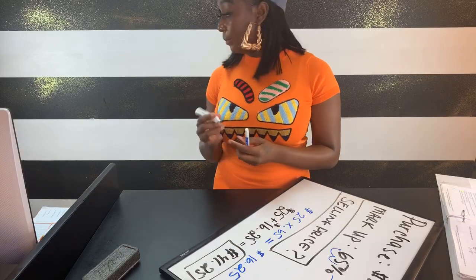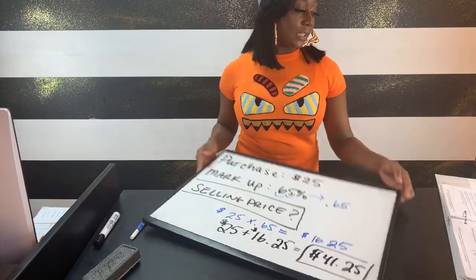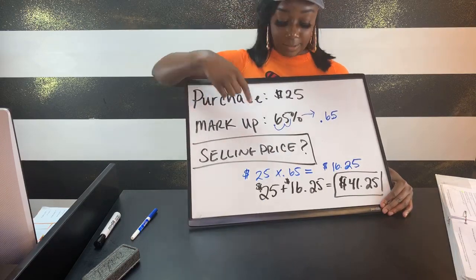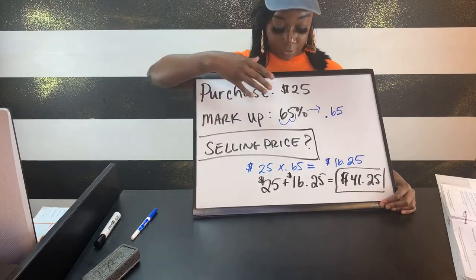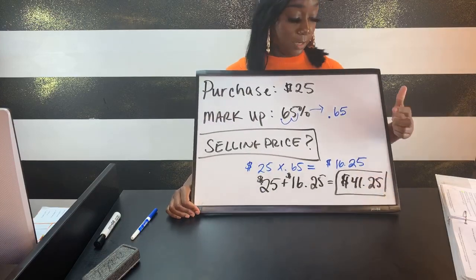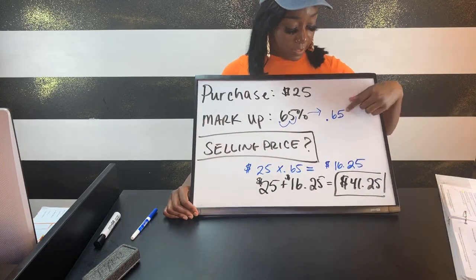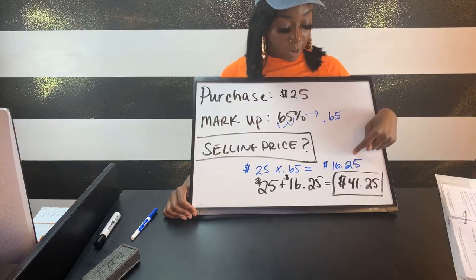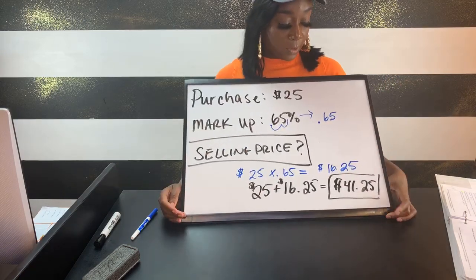Just to go through the problem one more time: Jasmine purchased sundresses for $25 each wholesale. If she marks the price up by 65%, what is the new selling price? We always convert the percent to a decimal — 0.65 — then multiply by her purchase price to get $16.25, which is how much she's marking it up. We then add that to the original $25 to get the selling price of $41.25.